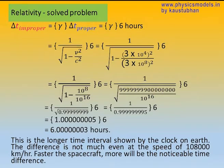So going through the calculation, you can see it is 6.00000003 hours. And that's once again because the speed of the spaceship is very small as compared to the speed of light.